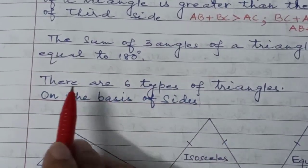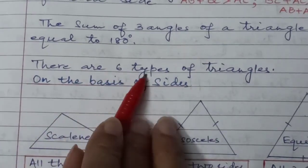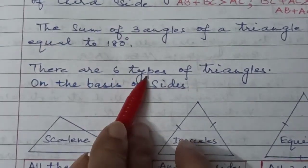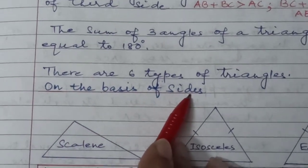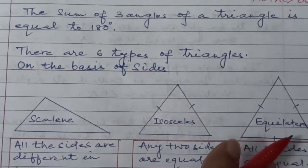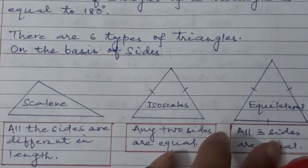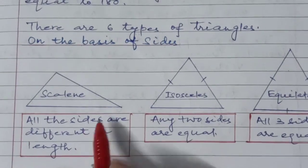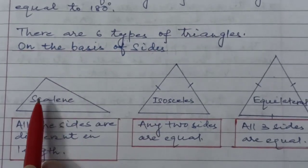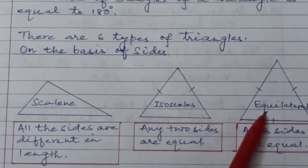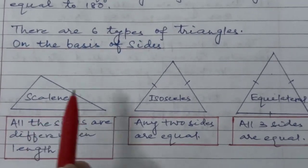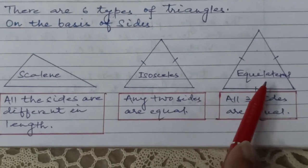There are six types of triangles. On the basis of sides, there are three types, and on the basis of angles, three types. On the basis of sides, triangles are of three kinds: first, Scalene; second, Isosceles; third, Equilateral.